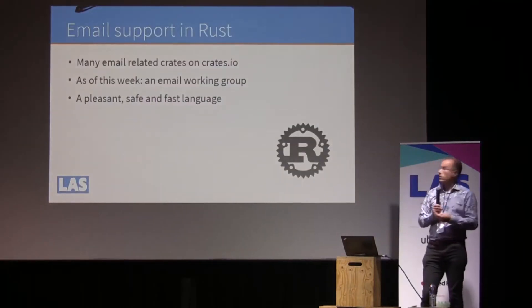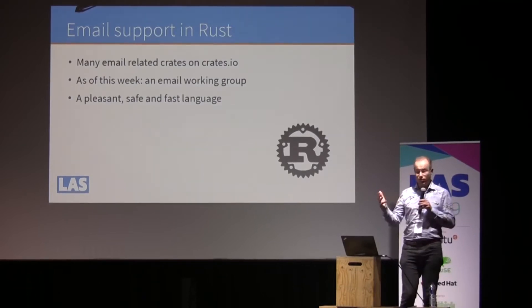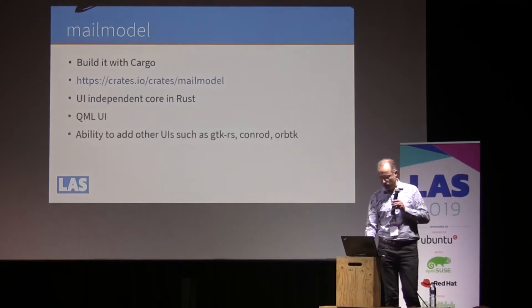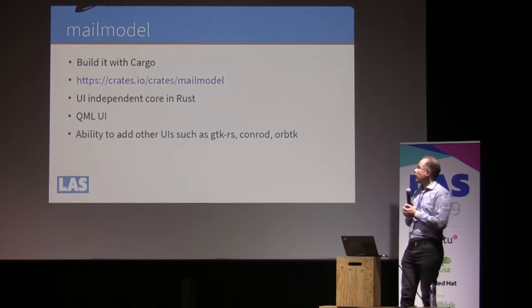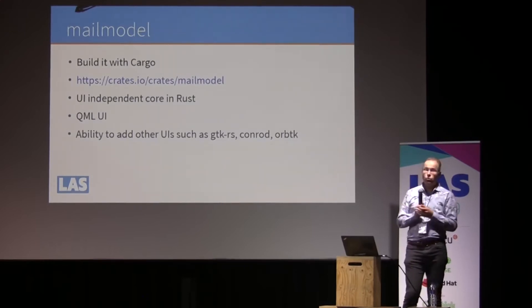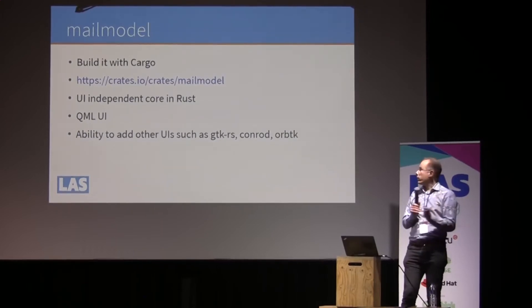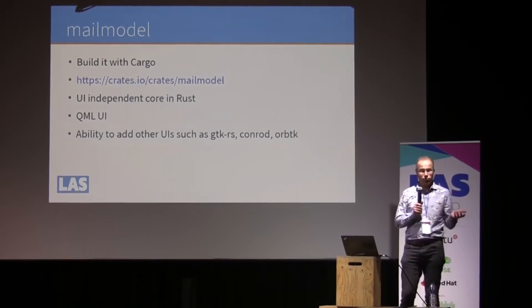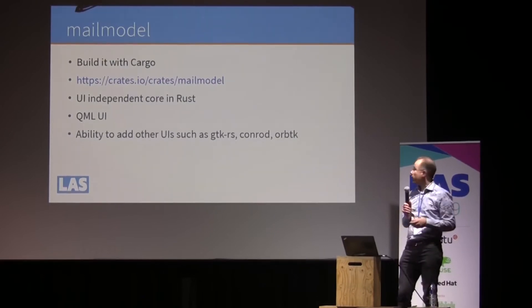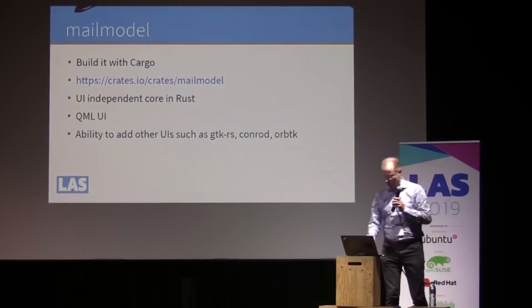If you want to write an email client in Rust, there are many crates you can just reuse — it's a great ecosystem. And as of this week, there's even an email working group in Rust, so it's going to be even better. Rust itself is a pleasant, safe, and fast language. The program is called MailModel. You can build it with Cargo and find it on the crates repository. There's a core to it which is independent of Qt — that's actually 90% of the code, just how to work with email. Then there's a QML UI on top of it. It would be very possible to add a GTK UI, or a Conrad, or an OxTK — other user interfaces that work with Rust on top of it, but I haven't done that yet.